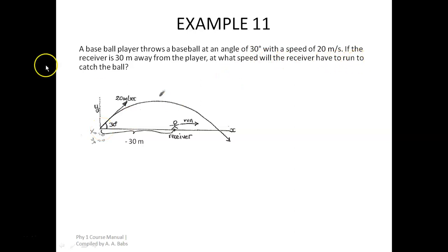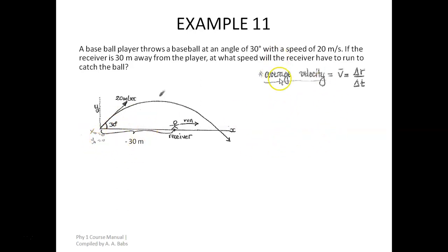The receiver must run to the point where the ball lands. We want to find the speed at which the receiver has to run. The initial horizontal and vertical positions of the player are both zero. Our average velocity — the speed we're looking for — is given as the change in horizontal position, delta R, divided by the change in time, delta T. Delta R is the horizontal distance the receiver must cover, and delta T is how long he has to run.